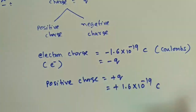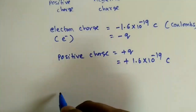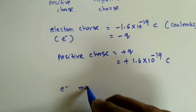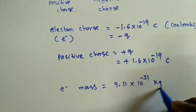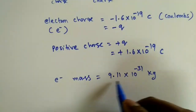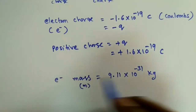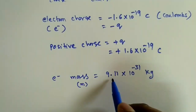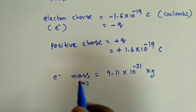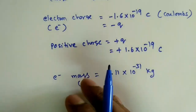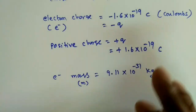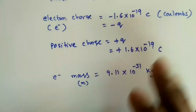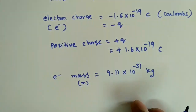Now we should also know the electron mass. The electron mass is equal to 9.11 × 10⁻³¹ kg. Whenever we see mass m in any expression, we use this value: 9.11 × 10⁻³¹ kg. Positive charges will have a mass approximately 1.5 to 2 times greater than this; those values will be given when needed.